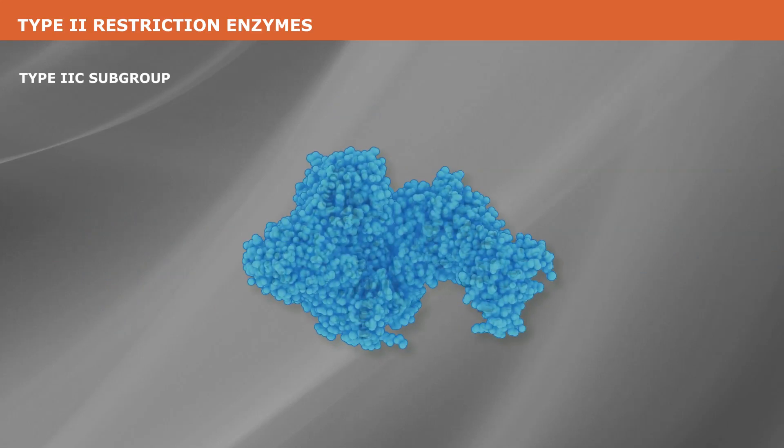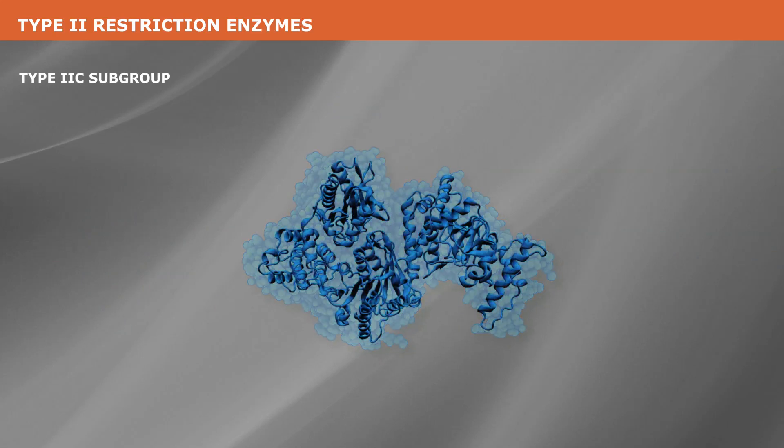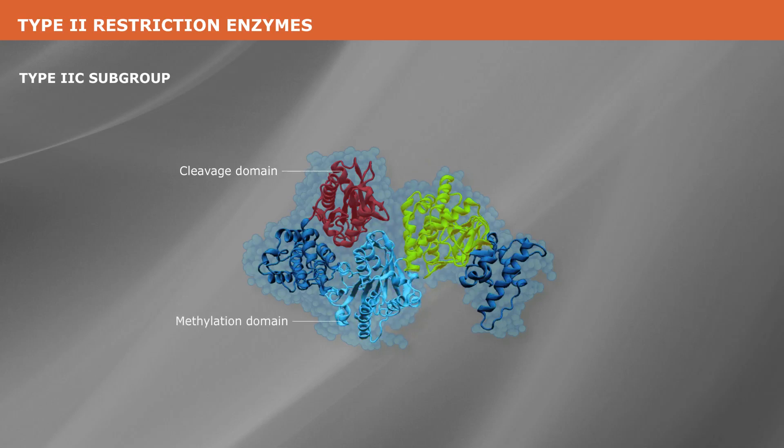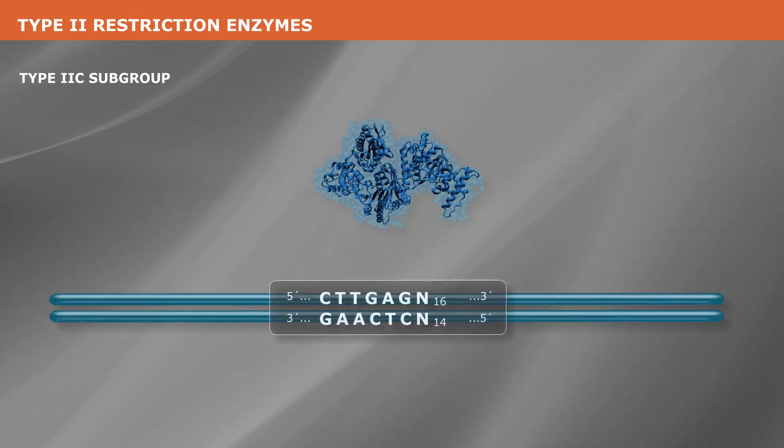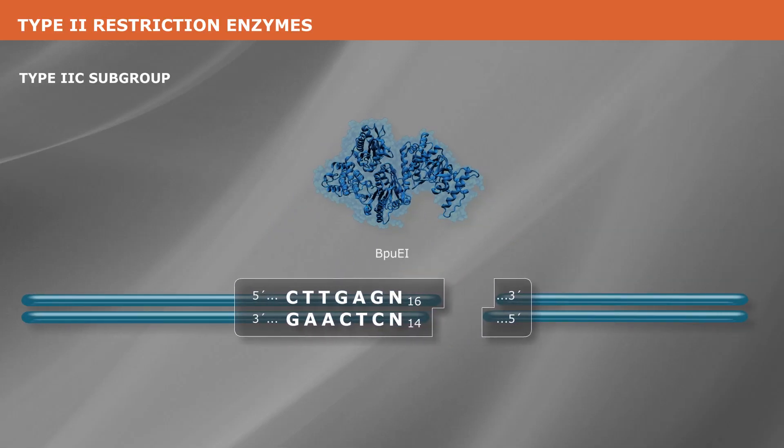In type 2C enzymes, restriction and modification activities are combined into a composite enzyme with three domains: one for cleavage, one for methylation, and a third for sequence recognition. Type 2C enzymes also cleave outside of the recognition sequences.